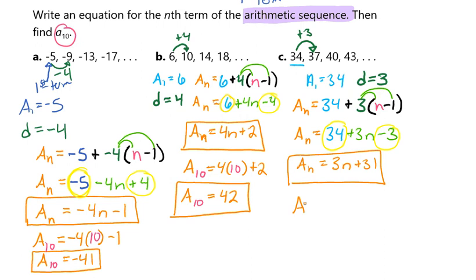And now we want to know what if the n was a 10. So now we're going to replace our n with the number 10, and we're going to plug that into our calculators. And we're going to see that our a sub 10 value is going to equal a 61. And so that is how you write the equation for the nth term of an arithmetic sequence and then find the 10th term.